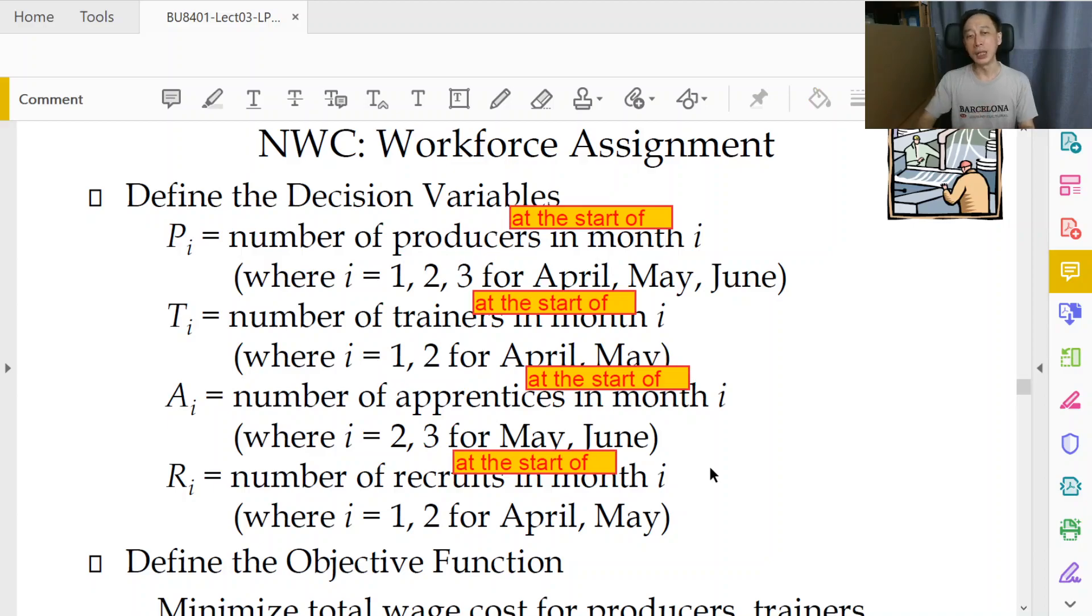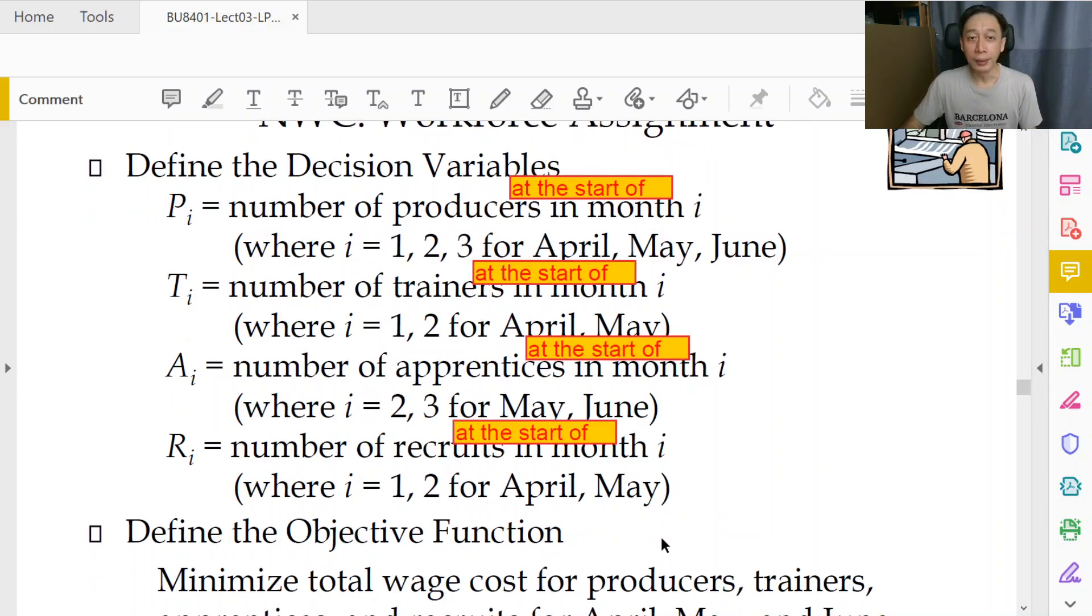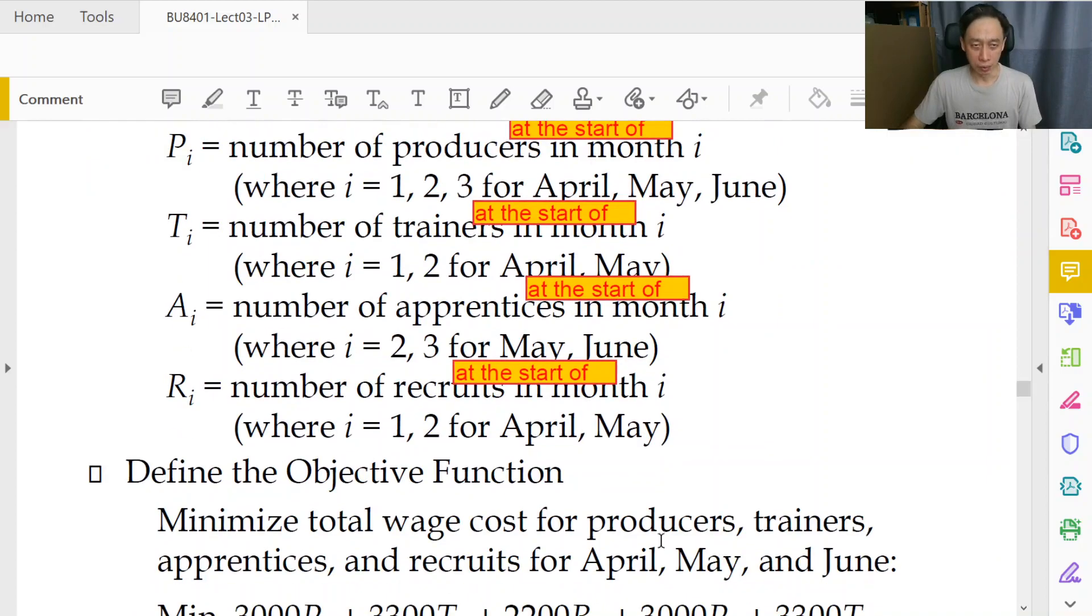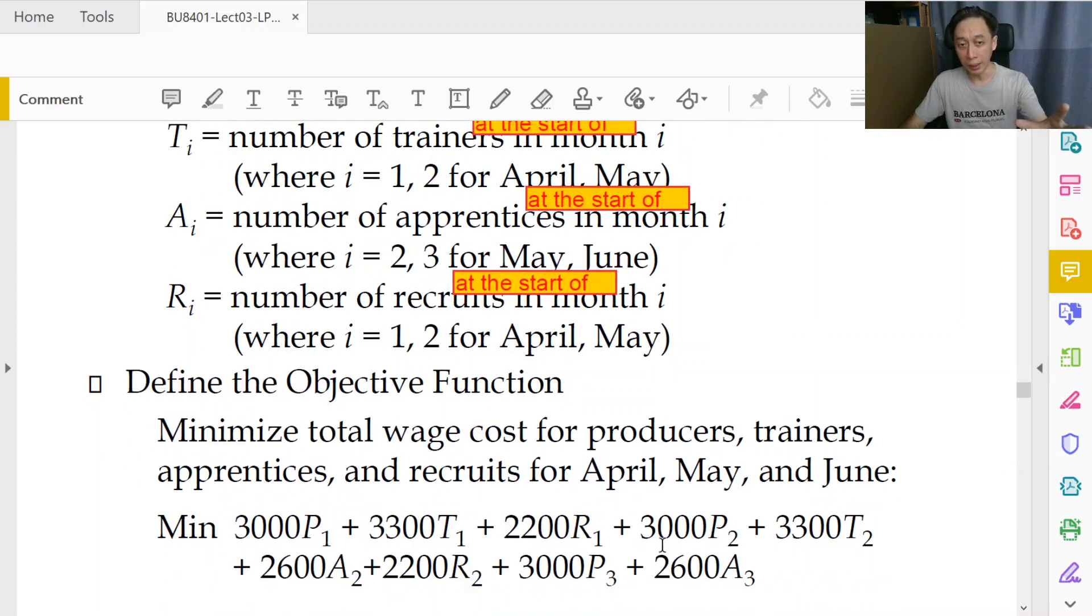Then it is absolutely clear what we are talking about. At the start of month June we have zero recruits. So again, these are little things that will help you out in thinking through the logic of the model correctly in line with what is described to us as the problem.